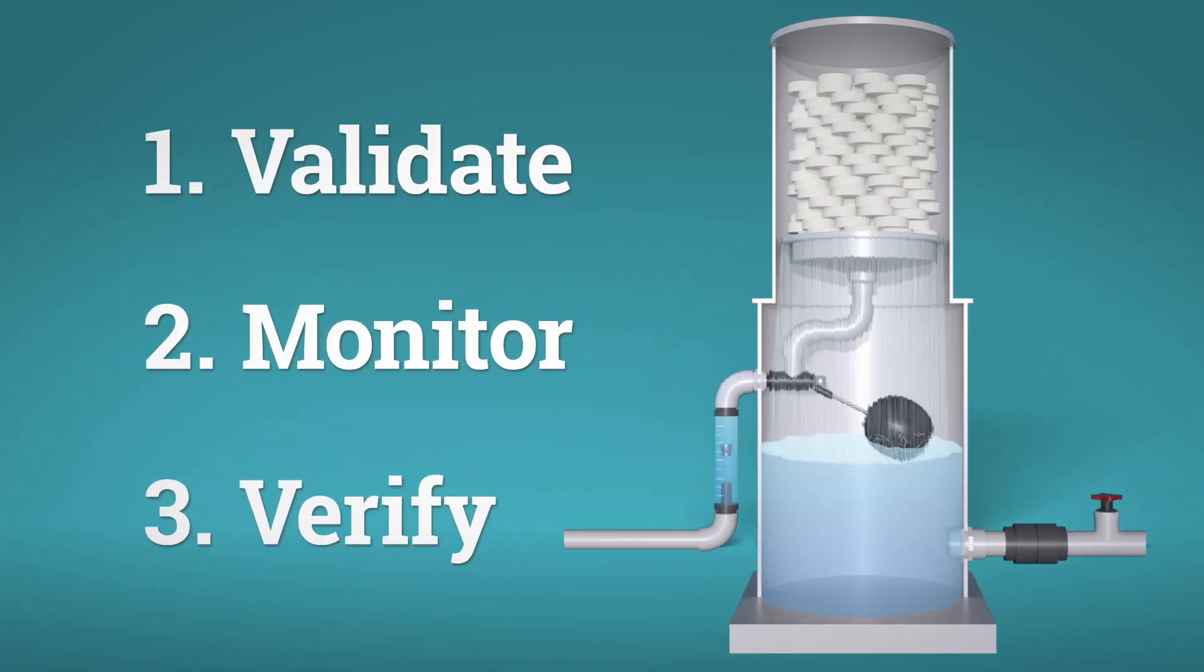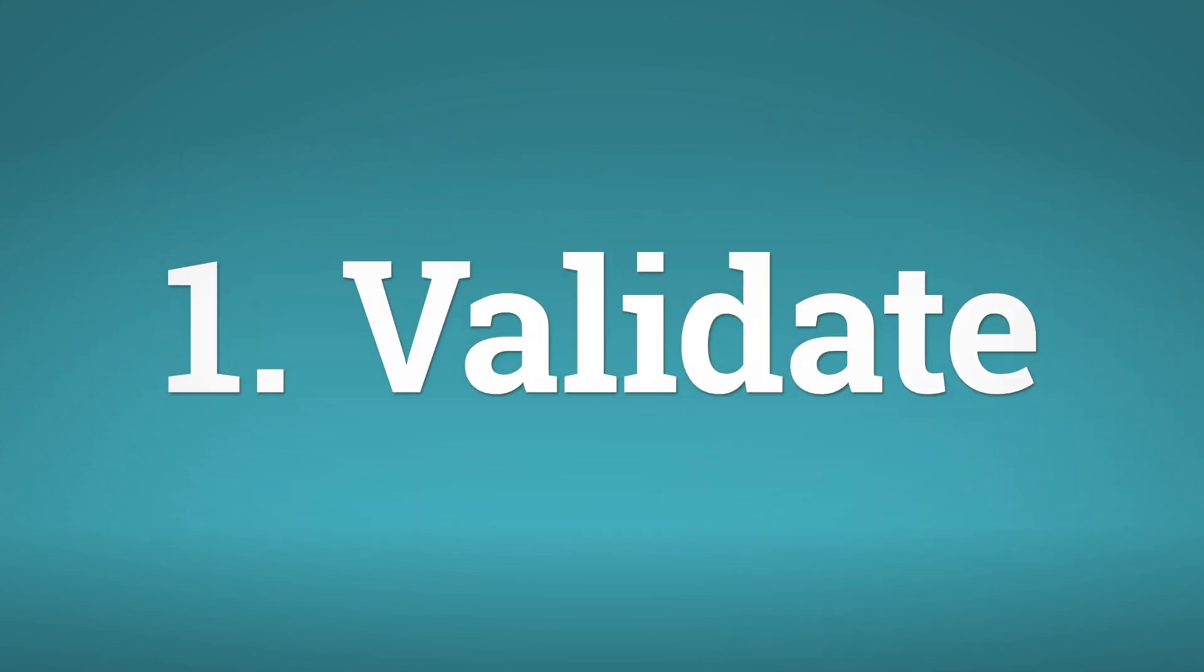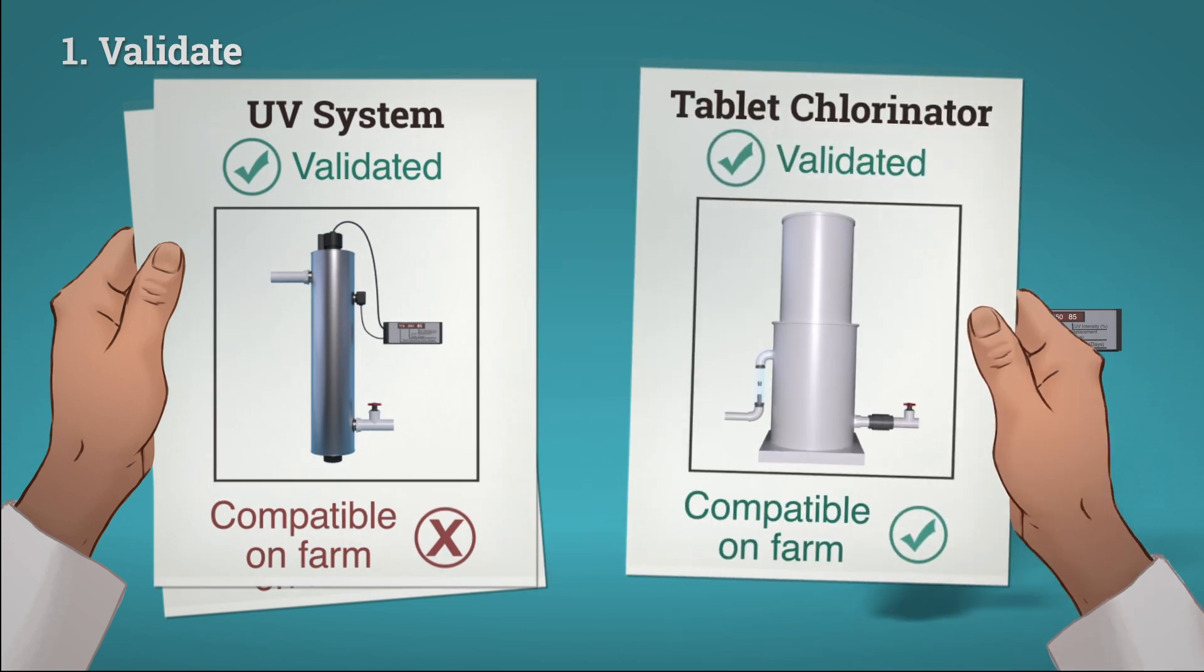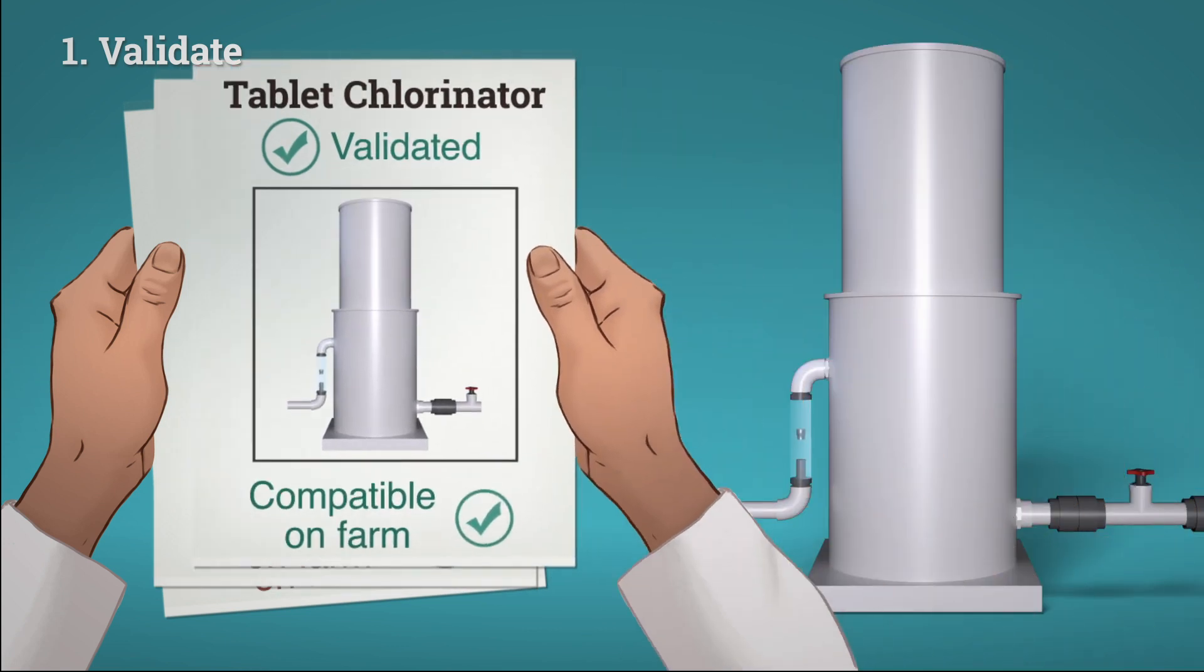There are three key steps to making sure your systems work. Number one, validation. Choose a system that has been shown to inactivate target microorganisms and is compatible with your production setup.